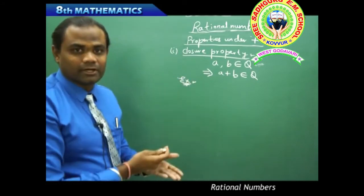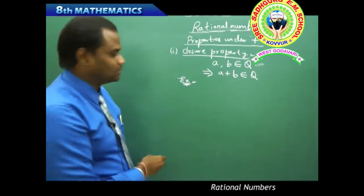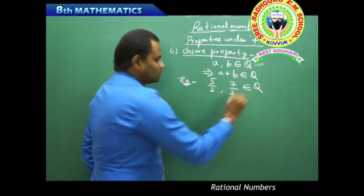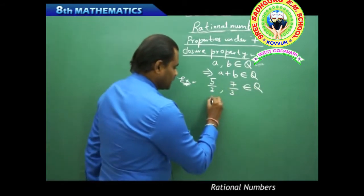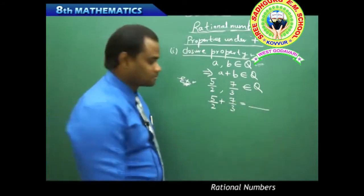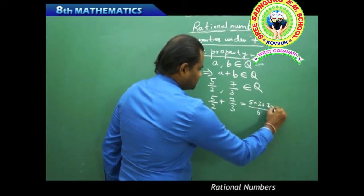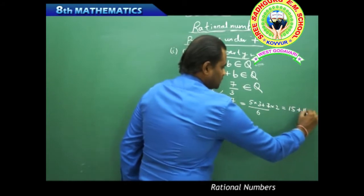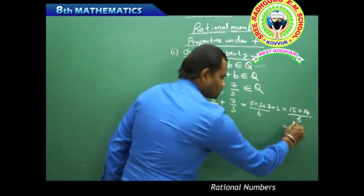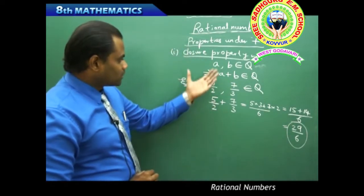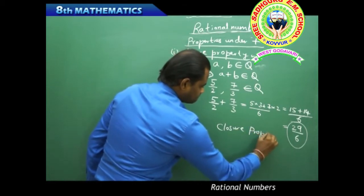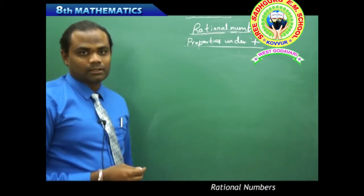We can verify closure property with an example. Take two rational numbers 5/2 and 7/3. Adding them: the LCM of 2 and 3 is 6, giving us (5×3 + 7×2)/6 = (15 + 14)/6 = 29/6. Since 29/6 is a rational number belonging to Q, the closure property is verified.